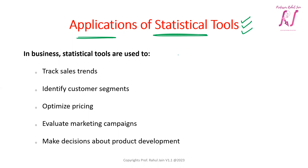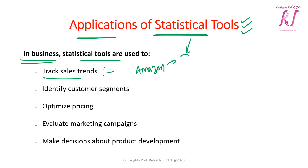Let's begin with business. Statistical tools in business can be used for tracking sales trends. For example, Amazon uses statistical tools that, based on user history and seasonal data, generate sales forecasts and determine which product will have the best sales at a given time.